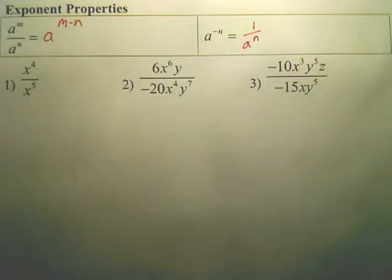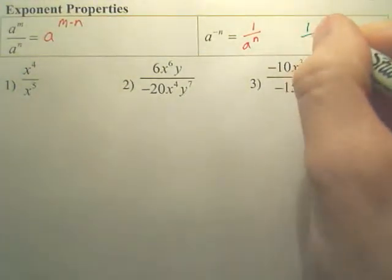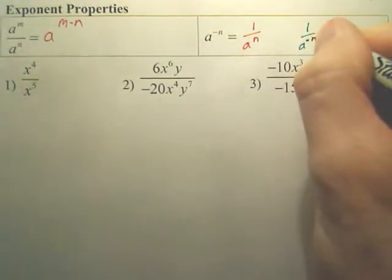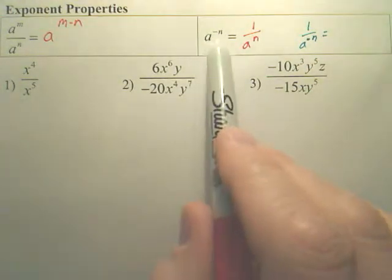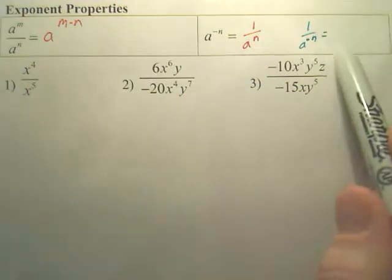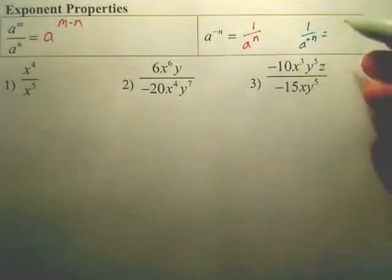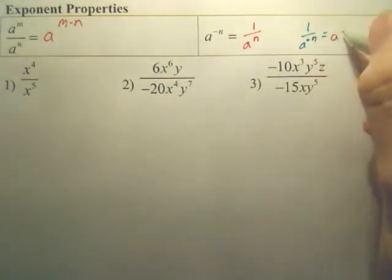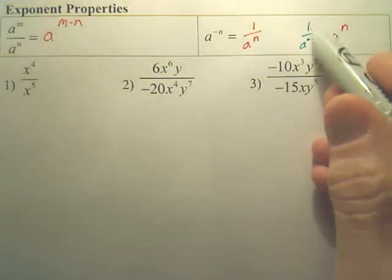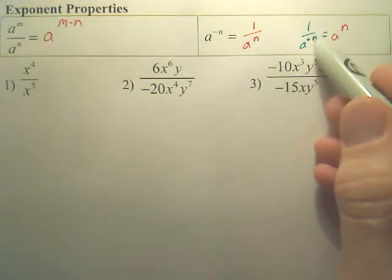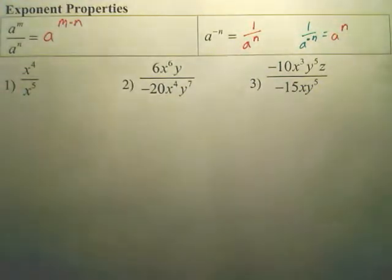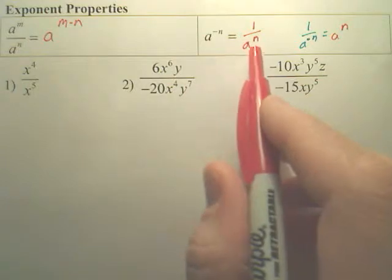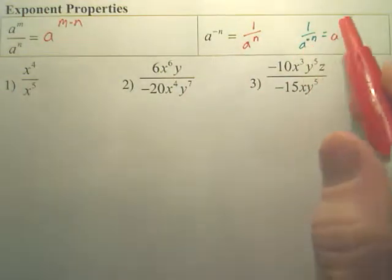Now if you had 1 over a to the negative n, well here, isn't this over 1? Didn't it go to the bottom? Well, what's this one going to do? This one is going to move to the top. So if you have this with a negative n on the bottom power, it's going to jump to the top and become a positive n power. So if it's on the top, it moves to the bottom, becomes positive. If it's on the bottom, moves to the top.